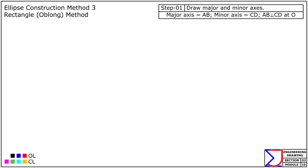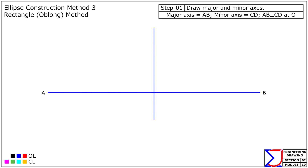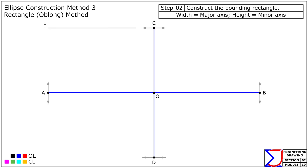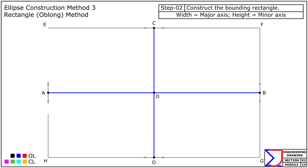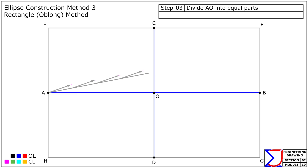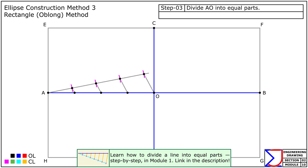First, draw the major axis AB and the minor axis CD of the specified lengths. Ensure that they bisect each other at right angles at the center point O. Next, use these axes to construct the rectangle EFGH, where the width and height correspond to the major and minor axes respectively. Now divide the segment AO into equal parts — for example, 4 — and mark the points accordingly as shown.